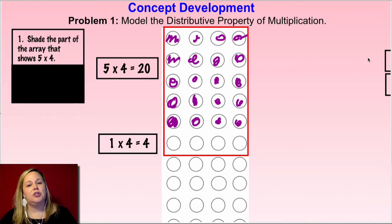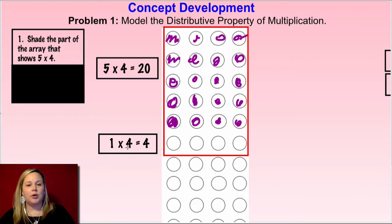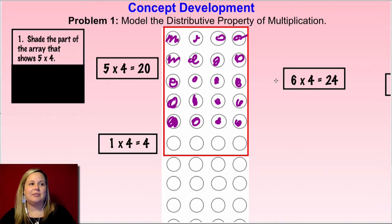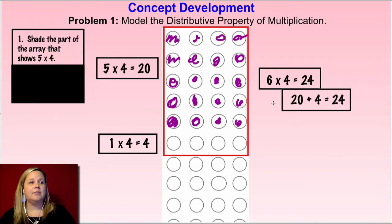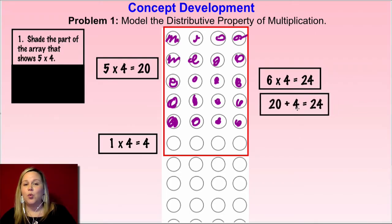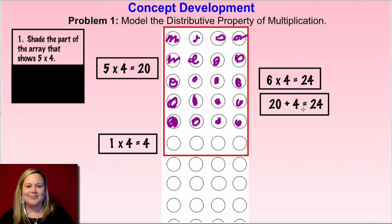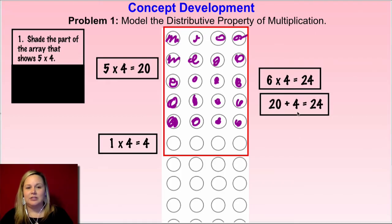Now I want to see how we can combine our two equations — our five times four equals 20 and our one times four equals four — to find the total number of dots. If I were to do that, I would come up with six times four, because this whole array is really six times four. You could also break it down and write 20 plus four equals 24. The 20 comes from five times four, and the four comes from one times four.